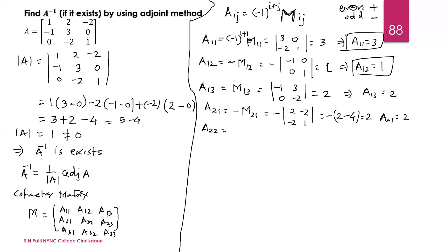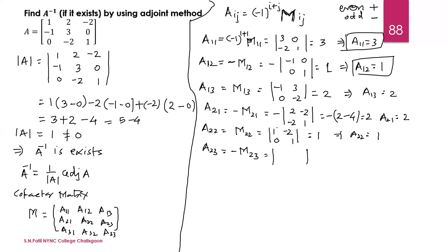Now A22: the sign is positive, so we just write M22. M22 is the minor of the middle element 3. Deleting its row and column gives 1, minus 2 and 0, 1. The determinant is 1 into 1 minus 0, giving 1. So A22 equals 1. For A23: the sign is negative, minus M23. Minor of 0, deleting its row and column gives 1, 2 and 0, minus 2. The determinant gives minus 2, and with the outside minus, A23 equals 2.